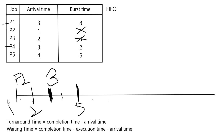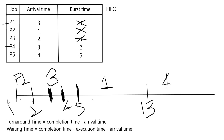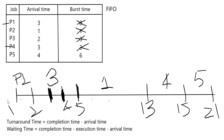Once P3 finishes at time unit 5, process 1 takes the CPU for 8 units of time, running from 5 to 13. By time unit 4, P5 has also joined the waiting queue. After P1 finishes, P4 goes next since it arrived before P5 — P4 runs for 2 units of time until time unit 15. Finally P5 runs until time unit 21.